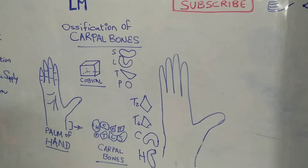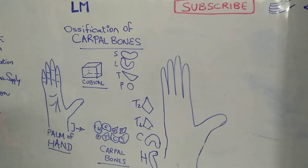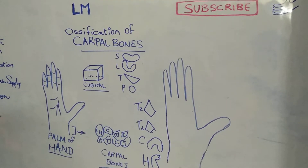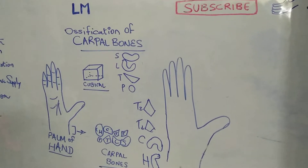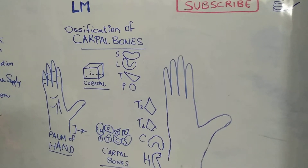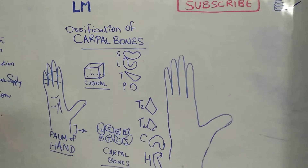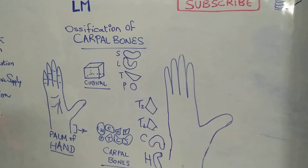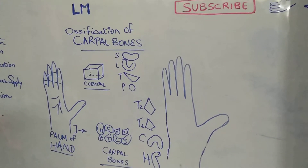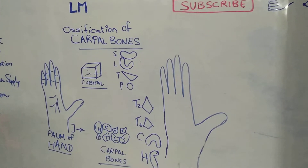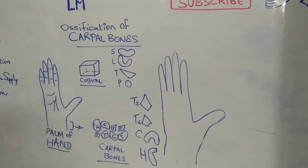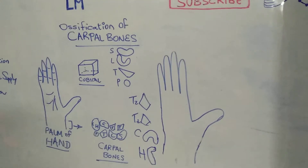These carpal bones are 8 in number. They are arranged in two rows of four each — a proximal row of four bones and a distal row of another four. They are named from lateral to medial. In the proximal row: 'SLTp — She Looks Too Pretty.' In the distal row: 'TTCh — Try To Catch Her.' The actual names are scaphoid, lunate, triquetral, pisiform, trapezium, trapezoid, capitate, and hamate.